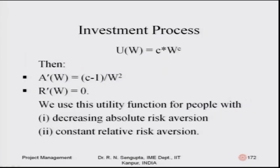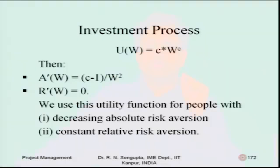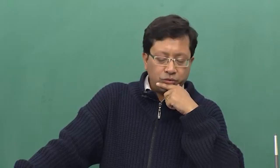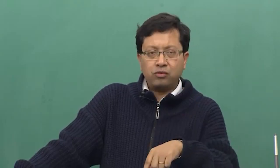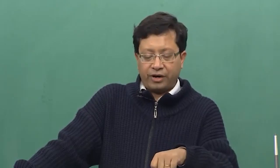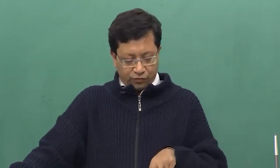The last example is the power function. Using simple derivative concepts, a prime is given as (c minus one) divided by w squared. Since w squared is always positive, and c is less than one and not equal to zero, c minus one is negative. This gives a prime as negative, meaning decreasing absolute risk aversion property. For r prime it comes out to be zero, giving a constant relative risk aversion property.